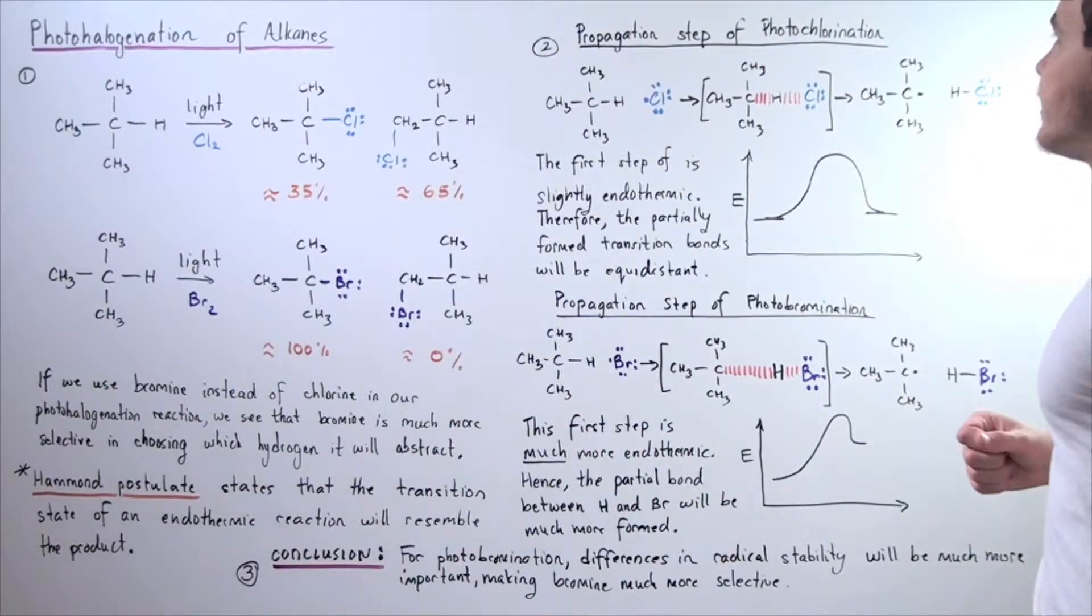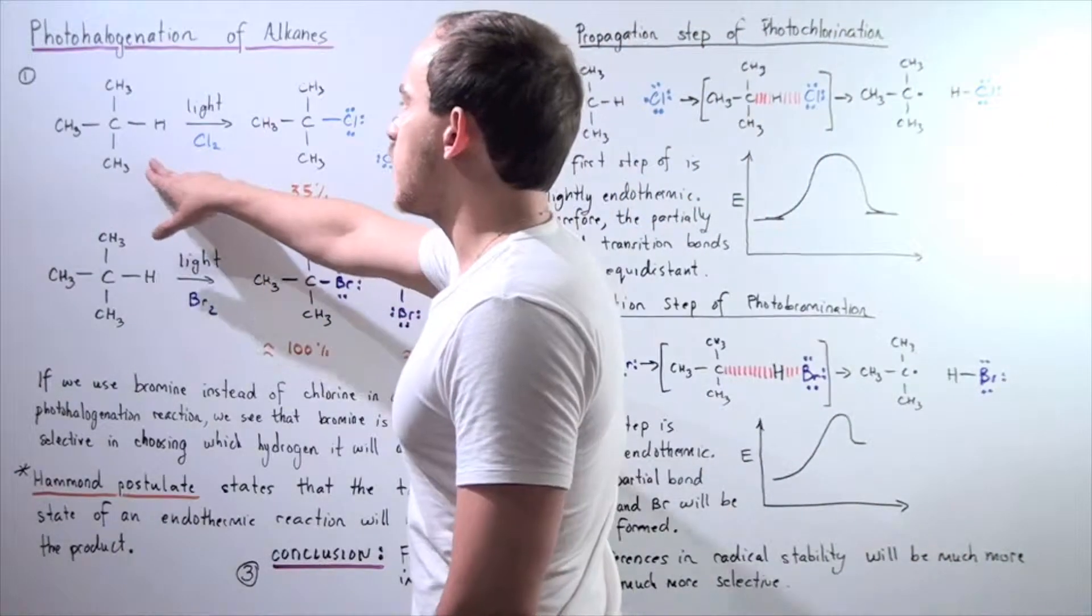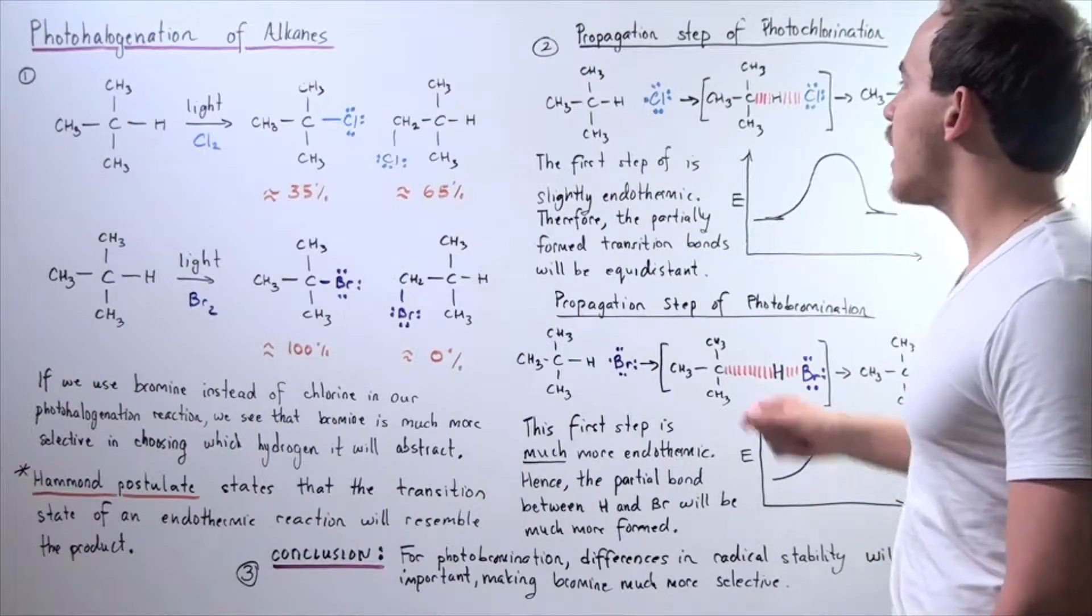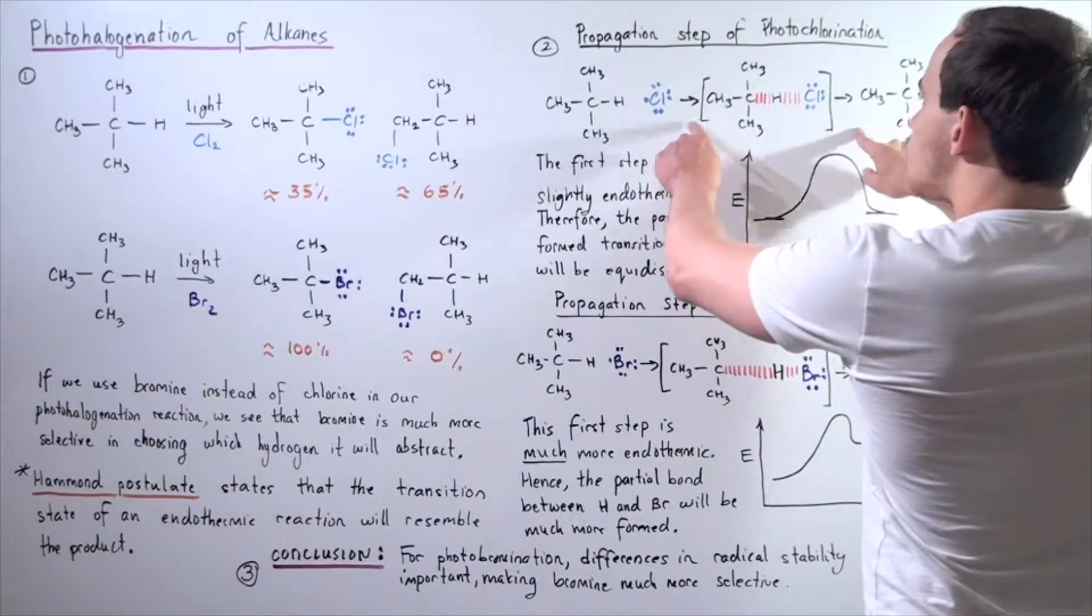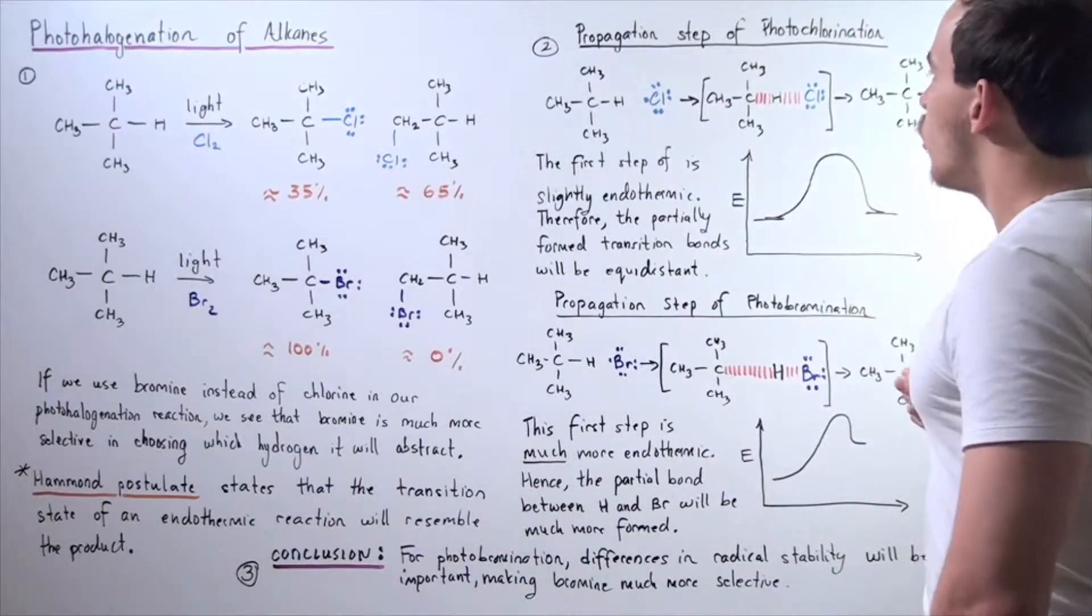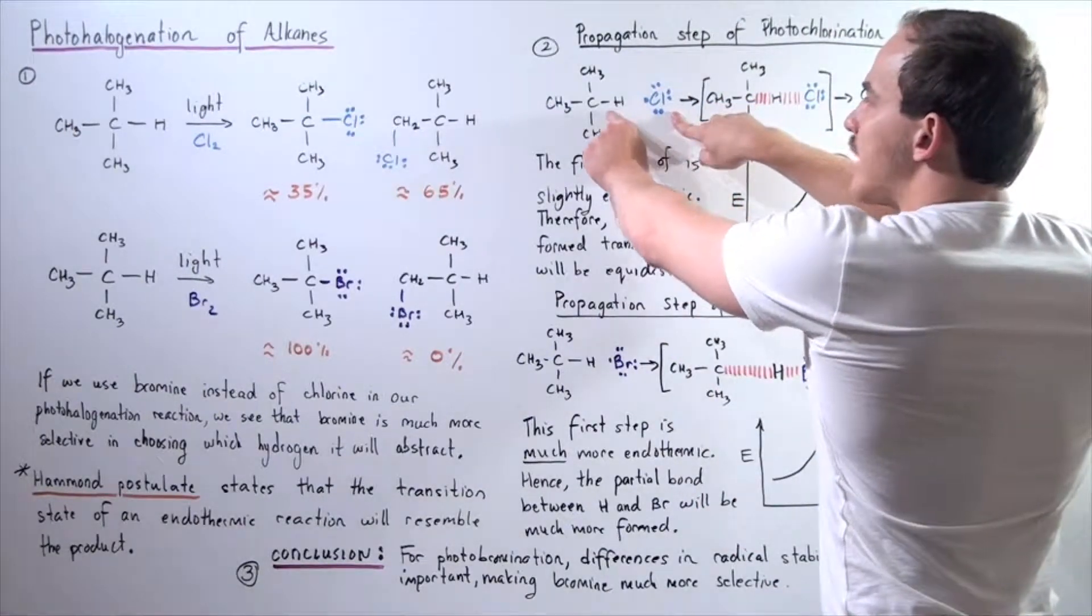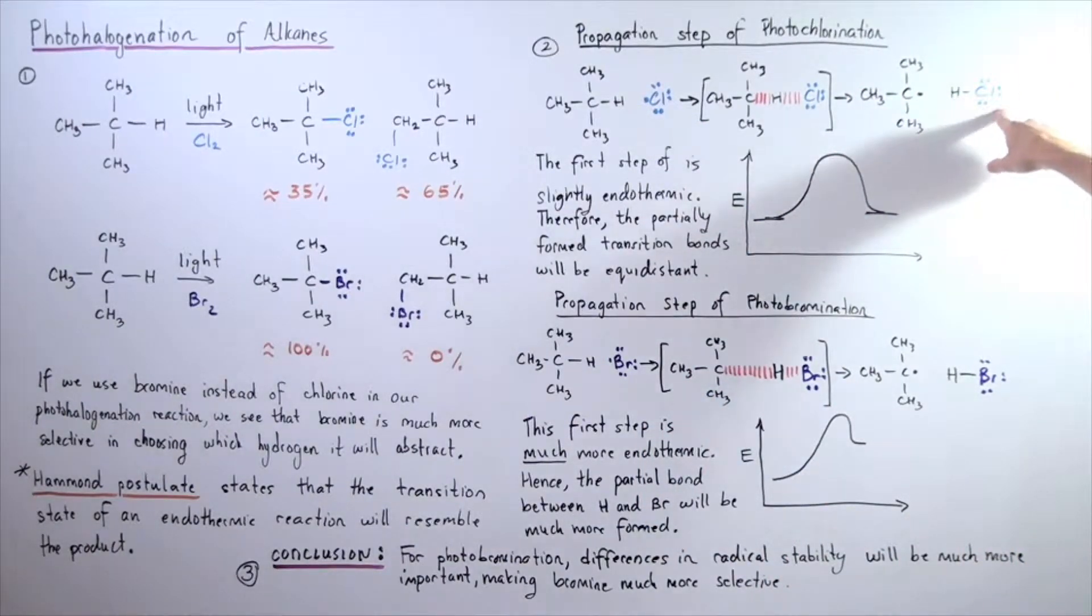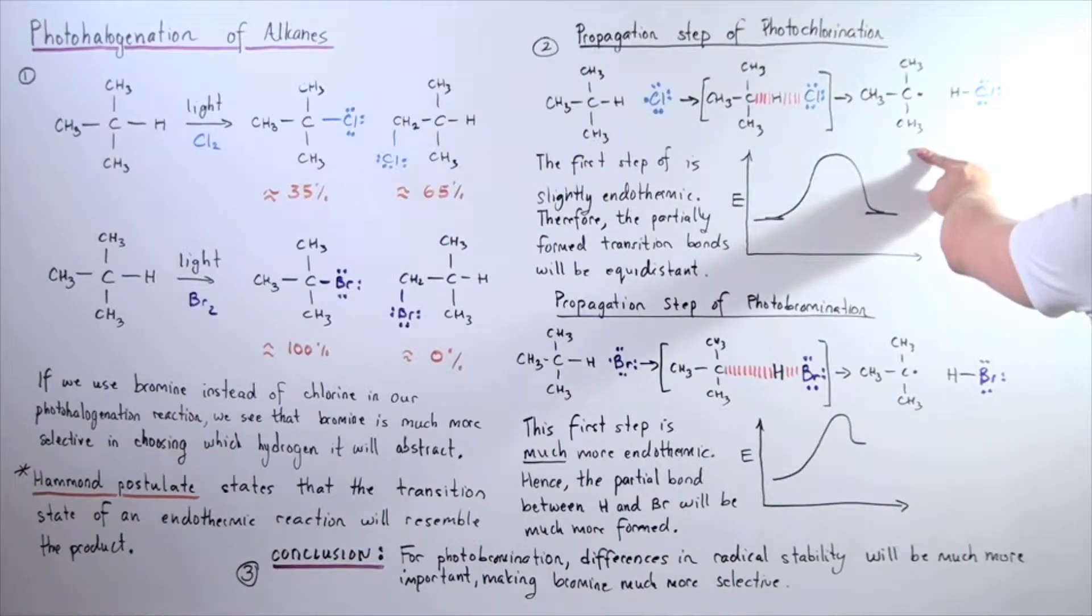So, let's look at the propagation step of photochlorination. Here we have our starting material, the isobutane, and here we have the chain-carrying radical, the chloride radical. So, this is our transition state, and this is a one-step mechanism. What happens is this chlorine molecule interacts with this H, abstracting that H, forming the following C-L-H bond, and this is our radical formed.